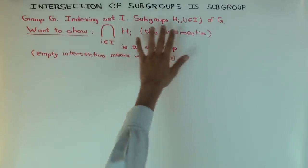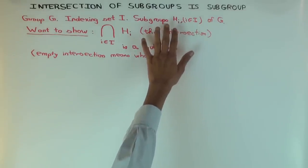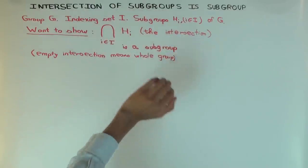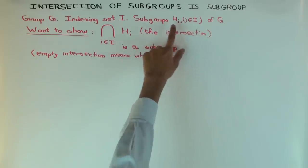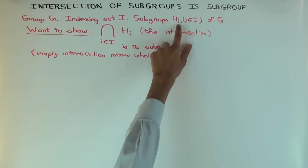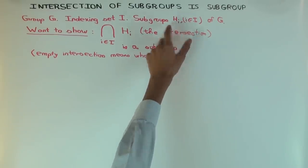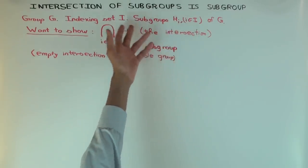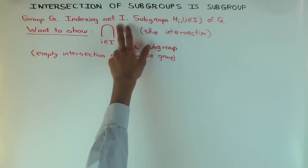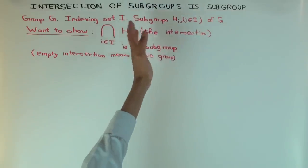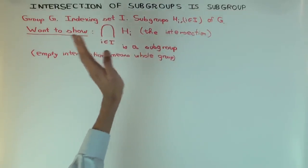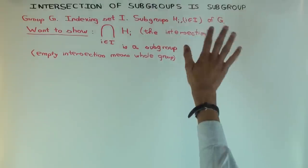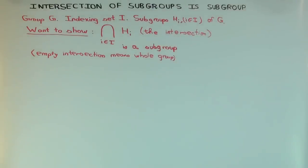I have a group and a bunch of subgroups. Usually if there are only finitely many I might call them h1, h2 to hn. But there could be infinitely many, so instead I use a subscript i, where i varies over some indexing set. If it's a finite number of things, the indexing set is just 1 to n. If it's countably infinite I could use all the natural numbers, but you can just think of it as h1, h2 to hn. Everything I say works for infinite intersections.